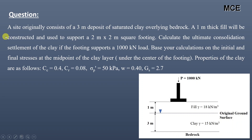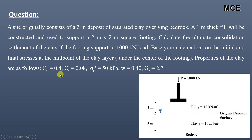The question states that a site has a three-meter deposit of saturated clay overlying bedrock. A one-meter thick fill will be constructed and used to support a two-meter by two-meter square footing. Calculate the ultimate consolidation settlement of the clay if the footing supports a 1000 kilonewton load. Base your calculations on the initial and final stress at the midpoint of the clay layer under the center of the footing.